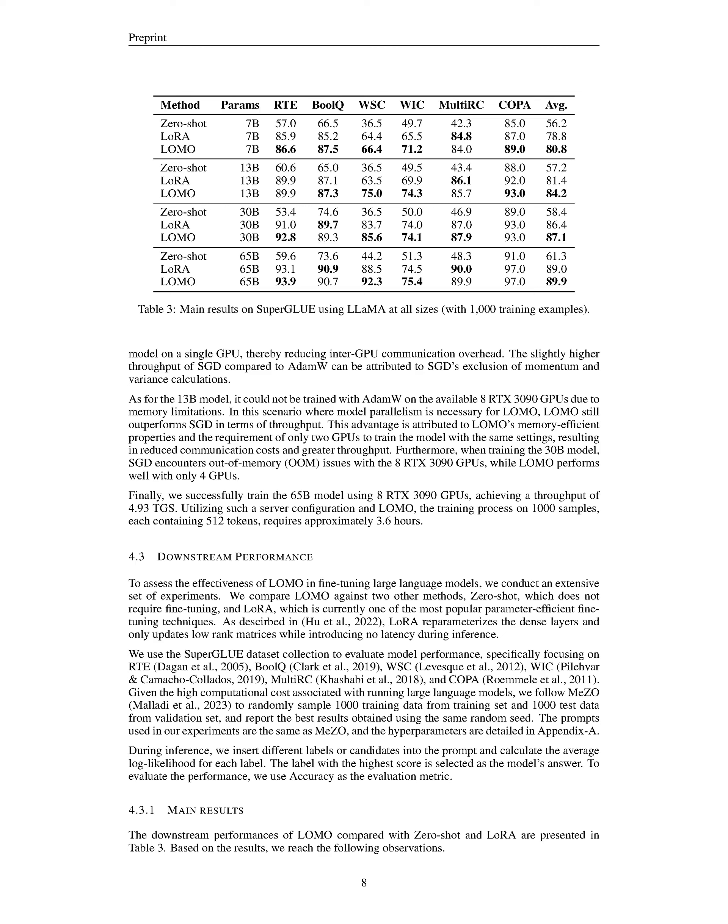Due to the considerable computational resources required to run large language models, we adopt the approach used by Mezzo, which involves randomly selecting 1,000 training data points from the training set and 1,000 test data points from the validation set. We report the best results achieved using the same randomly generated seed and conduct our experiments using the same prompts as Mezzo. During the inference process, we insert different labels into the prompt and compute the average log likelihood for each label, choosing the label with the highest score as the model's response. We use accuracy as our evaluation metric.